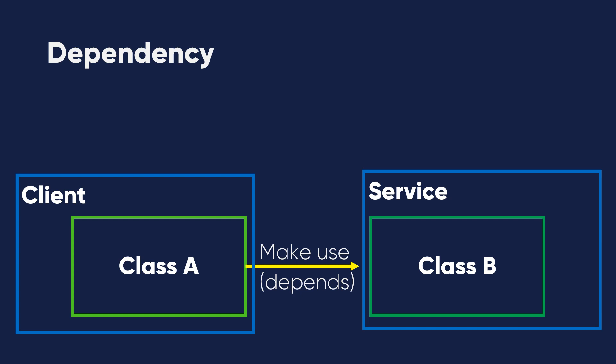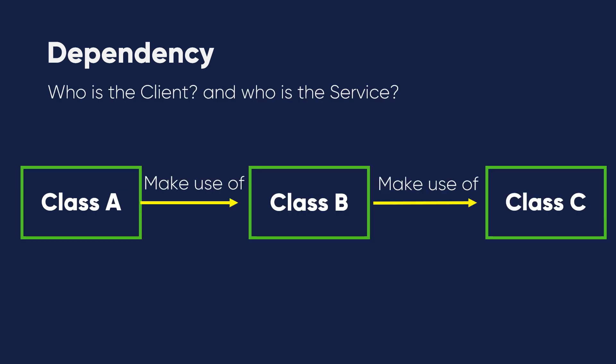Dependency means relying on something. Class A relies on B and depends on B in making its work.